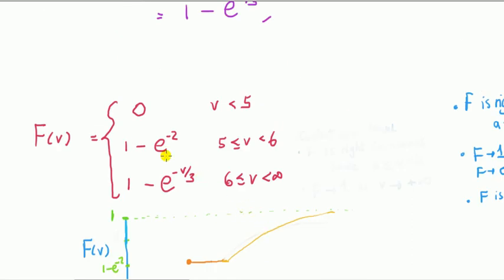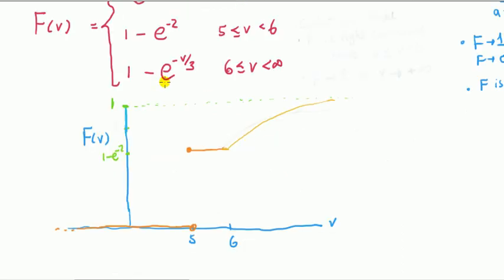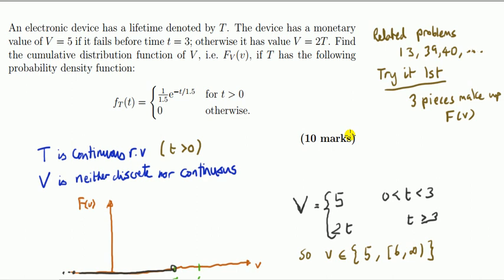Another common mistake: you might find the CDF in only two pieces because you don't realize V is neither discrete nor continuous. Also, some students see e to the minus something and remember that curve goes downward, so they sketch the CDF going downward — but no, it's one minus that, so it goes upward toward 1. As V increases, the CDF should tend toward 1. This is a good question; you don't see this type often in introductory math stats books, but it's valuable because the random variable is neither discrete nor continuous.